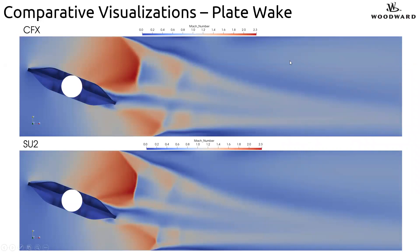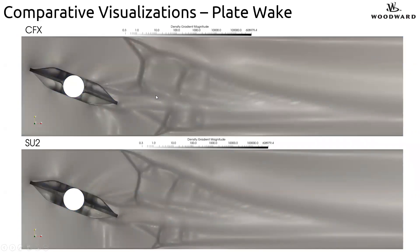Moving downstream to the plate wake — CFX again on top, flow from left to right — these are the shock patterns that form in the wake. Again we see very similar general shapes between the two codes. Looking at the same region now visualizing density gradient on a log scale — a Schlieren-type plot — this plot shows less dissipation in the SU2 setup compared to CFX. But otherwise the shock patterns are seen to be very similar between the two codes.